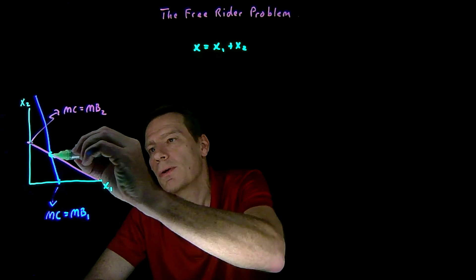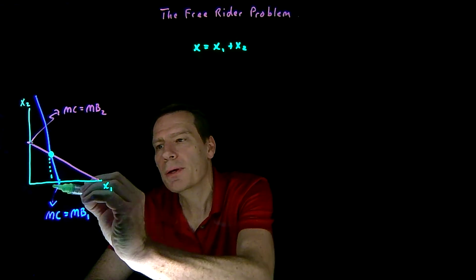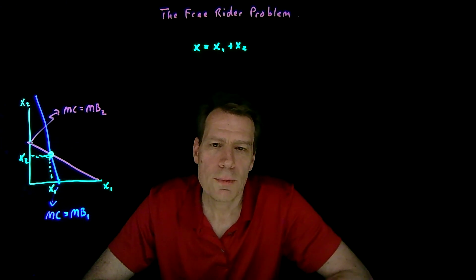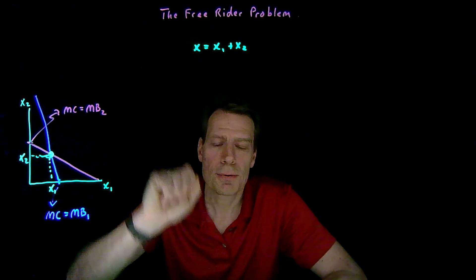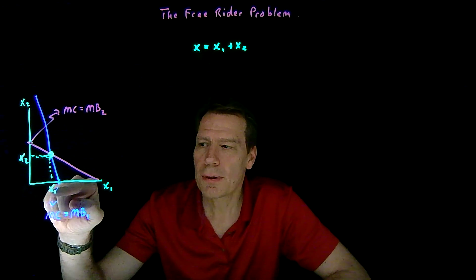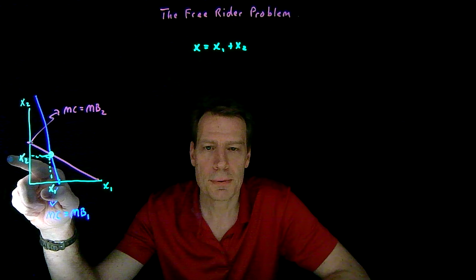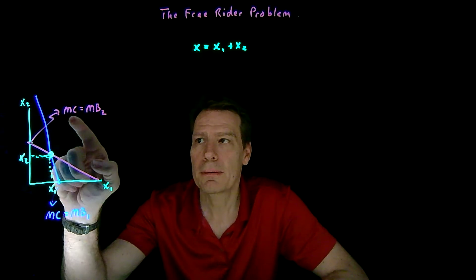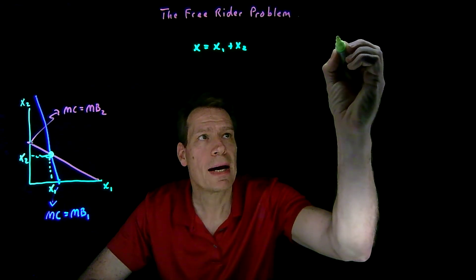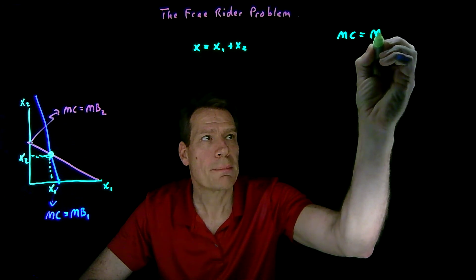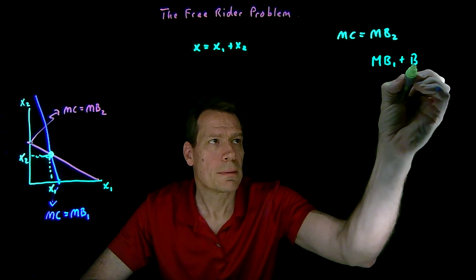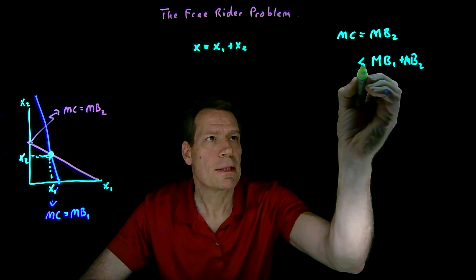So now we have two best response functions, and where they intersect is where the Nash equilibrium lies. You're going to buy this many fireworks and I'm going to buy this many fireworks. We can now ask: is that quantity of fireworks — the sum of our two purchases — the efficient quantity of this public good? Well, if I think you're going to buy X1 and I'm best responding by buying X2, I'm keeping my purchases up until my marginal cost equals my marginal benefit.